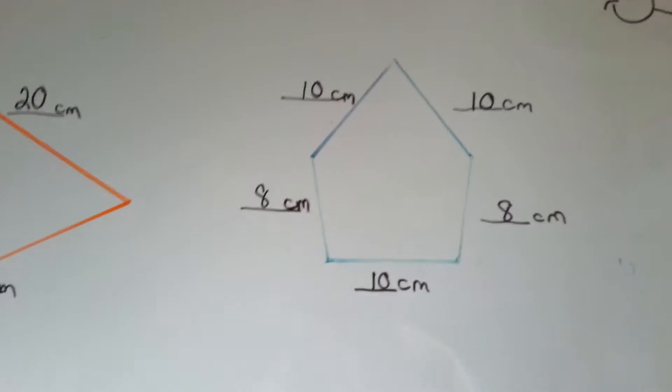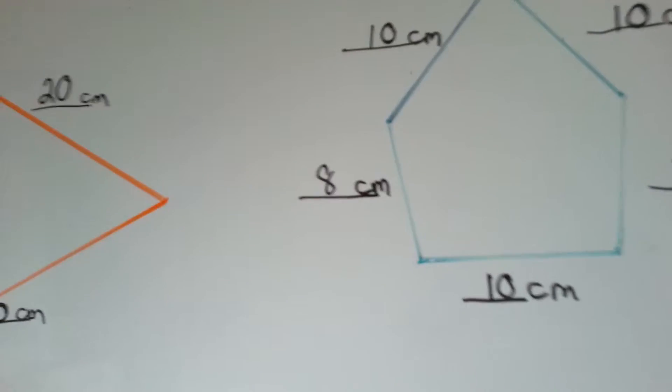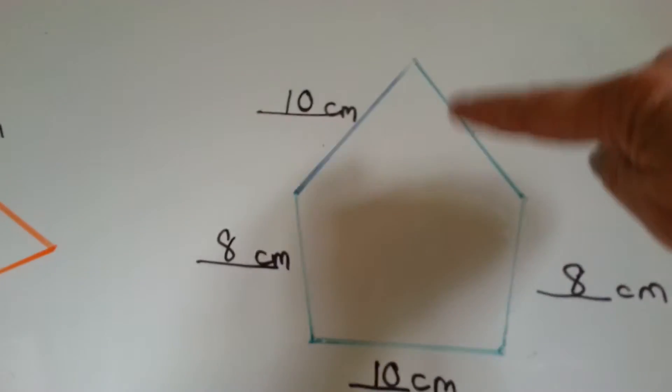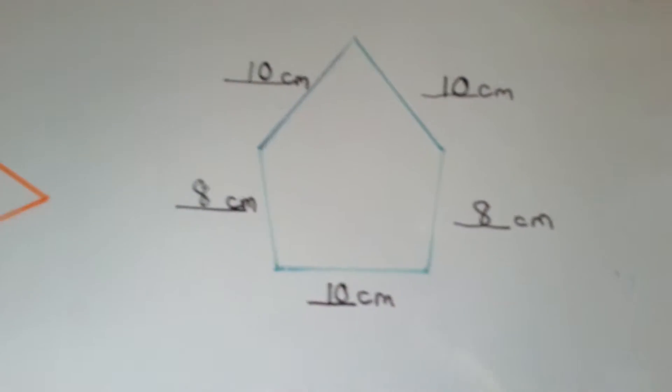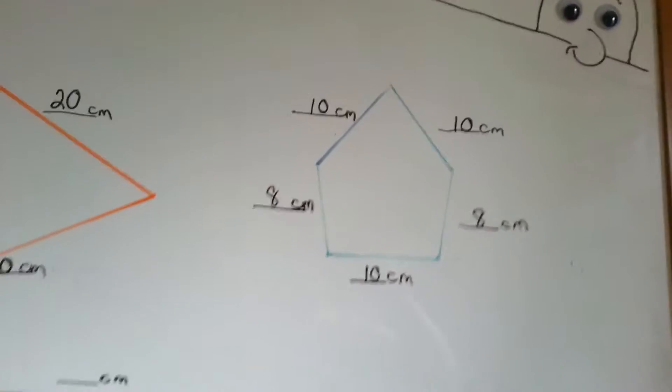I did the same thing with this one. I measured that this side is 10 centimeters, this side's 8, so is this one. That's 10, and that's 10 centimeters. And that's the perimeter of that one.